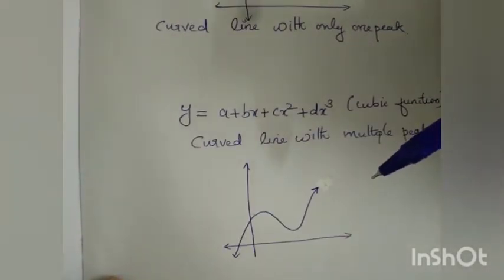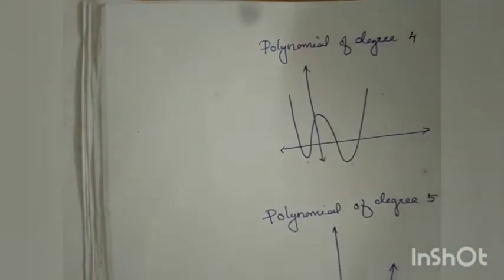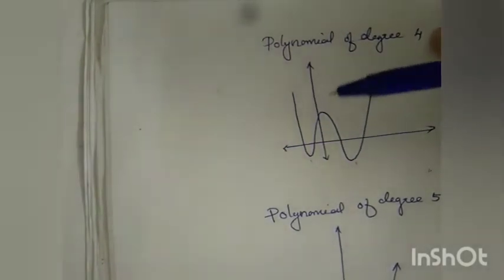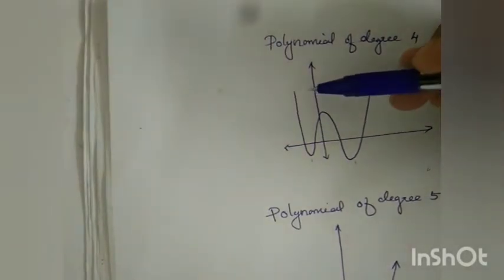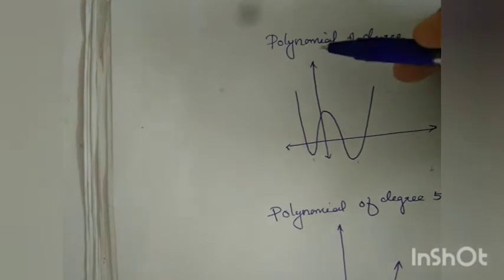There are also higher order polynomials — for example, a polynomial of degree 4. Therefore, we know that if there are n plus 1 points, we can construct a polynomial of nth order.